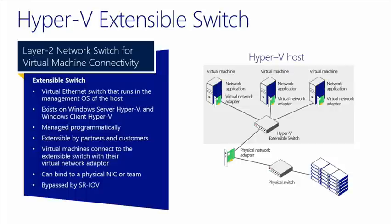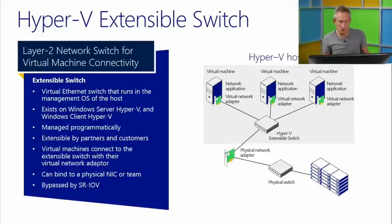The Hyper-V extensible switch is a layer 2 network switch for VM communication and connectivity. It runs in the management OS of the host, bound to the physical network adapter. It exists in Windows Server Hyper-V and, if you're developing extensions, you may also develop on Windows Client Hyper-V — Hyper-V has existed in Windows Client since Windows 8 and is also in Windows 8.1. It's managed programmatically and it's extensible.